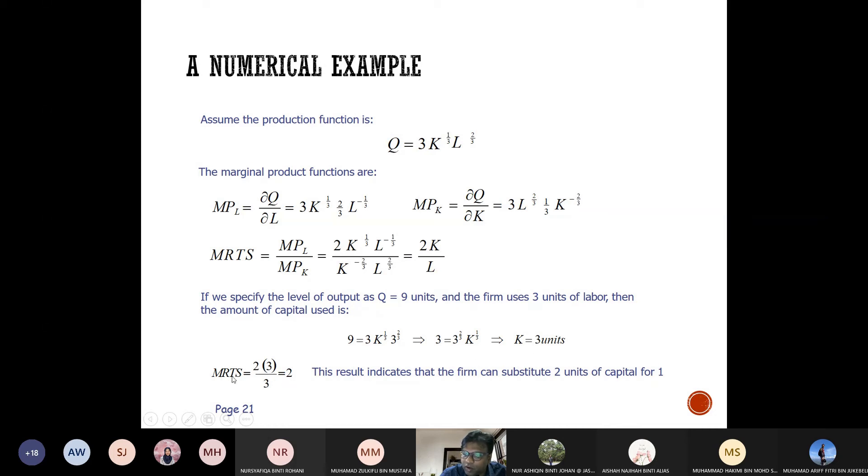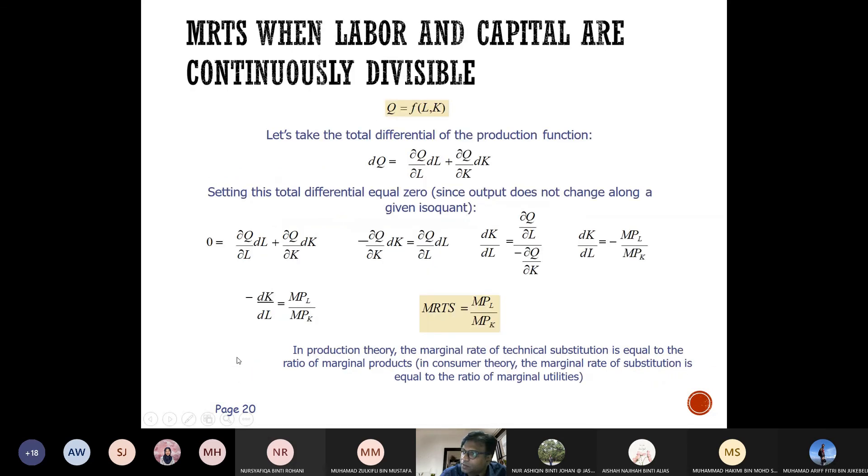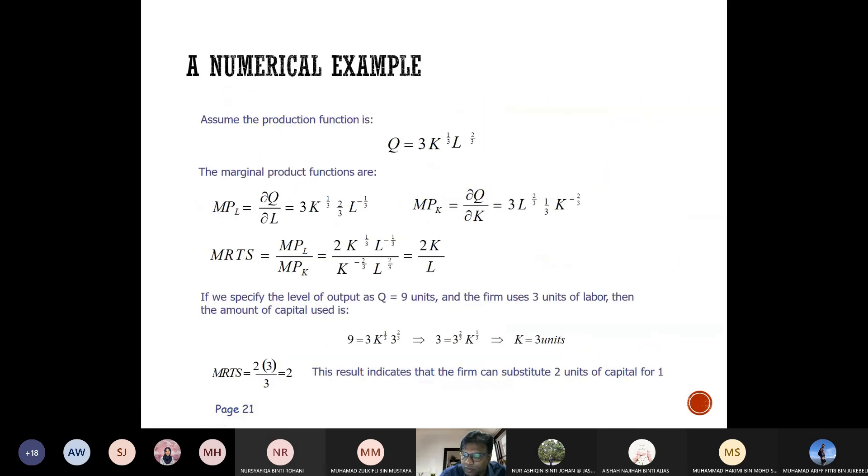The marginal rate of technical substitution - this result indicates that the firm can substitute 2 units of capital for 1 unit of labor.